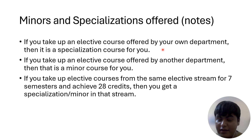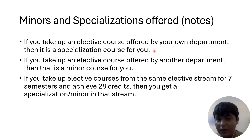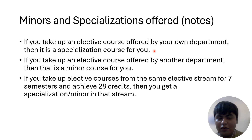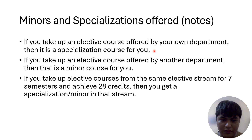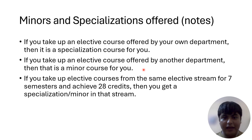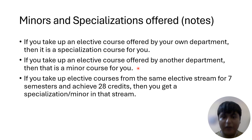Just like in school you have a science stream, a commerce stream, a humanities stream — it's similar here. If you take up an elective course offered by your own department, then that course is called a specialization course for you. If you are in the Computer Science department and you take a CS elective, that's a specialization. But if you take an elective from another department — one you are not studying in — then that is a minor course for you.